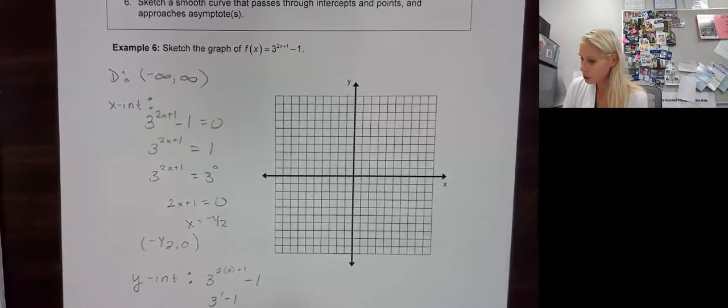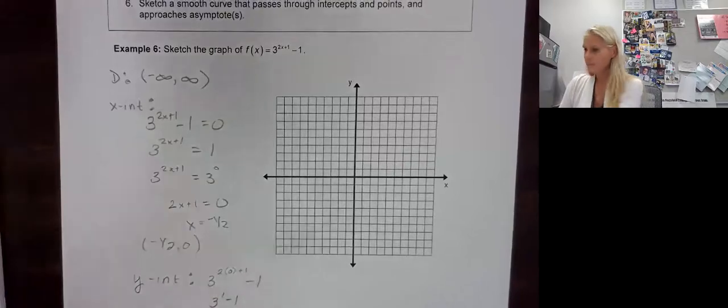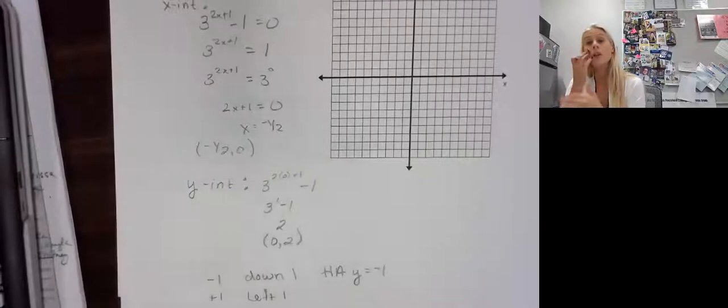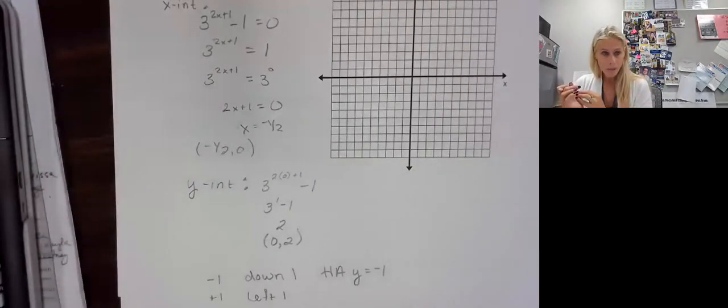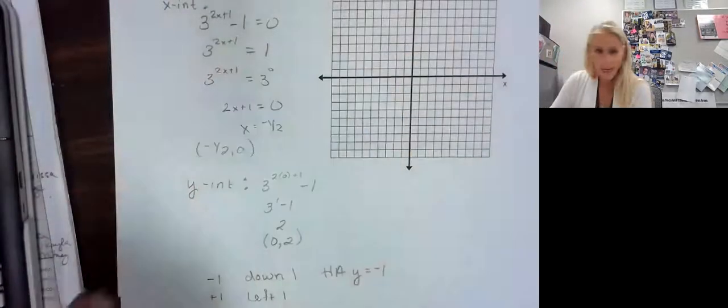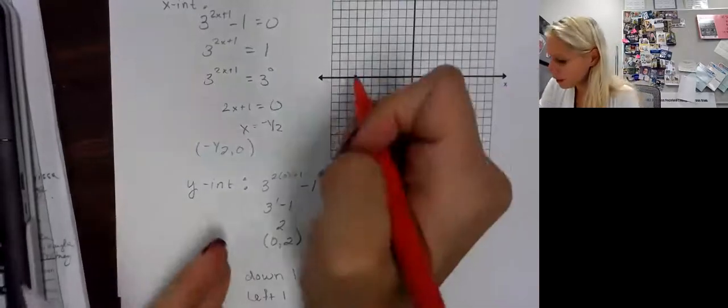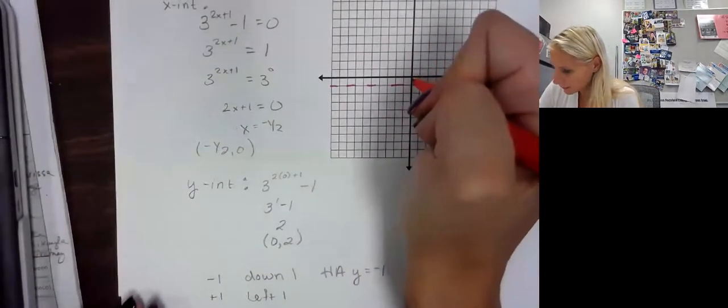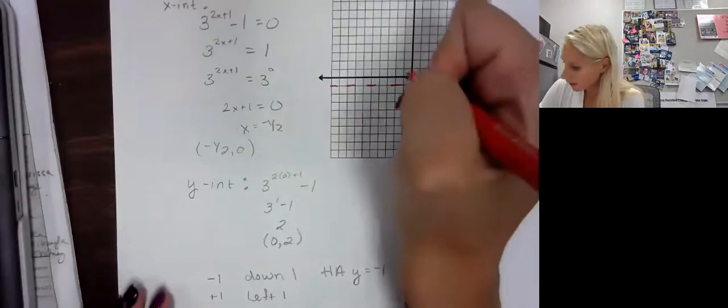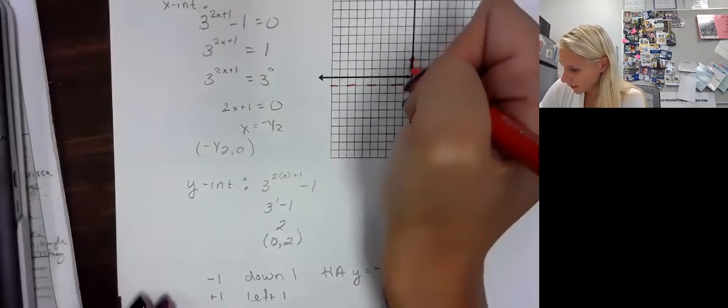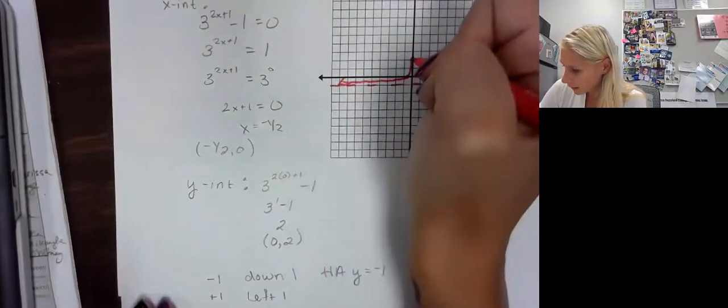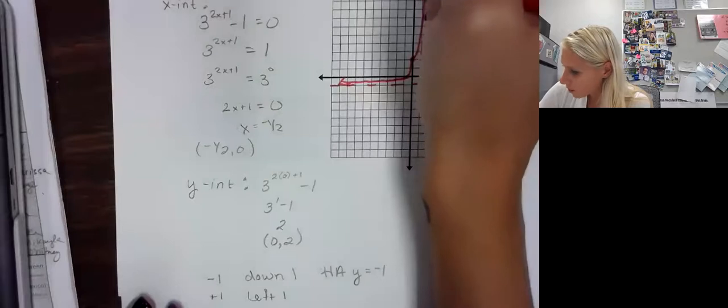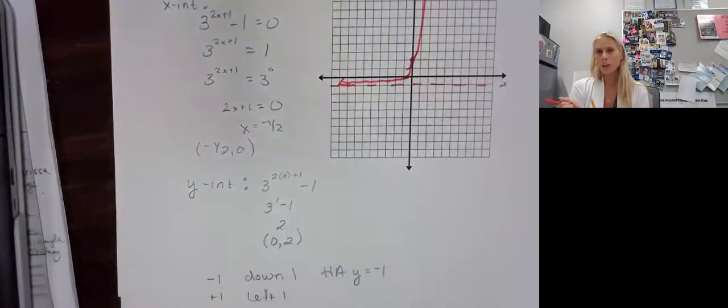Then we have this 2x plus 1. So the plus 1 on the inside makes it go left 1. And the 2, of course, makes it do that vertical, or in that case, there's a horizontal stretch or shrink. But really, we don't have to worry about that right now. We can look at these other points and just connect. So we have the horizontal asymptote right there. And we get the negative 1 half 0, that's our x-intercept. And our y-intercept is 0, 2. And then because we have our 2 points, all we have to do is connect. Now, if you need it to be 3 or more points, all you have to do is plug in a value and estimate where it is.